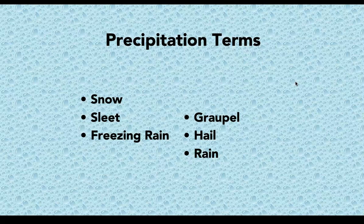Speaking of precipitation — neither rain, nor snow, nor sleet. Yeah, there's more: there's hail, freezing rain, and graupel. What the heck is graupel? Well, we're going to learn what all of these are. If you didn't know the difference between sleet and freezing rain, hopefully you will now — there is a difference.